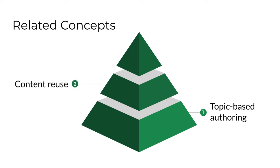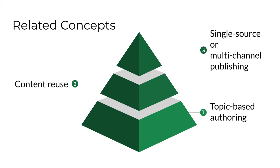Content reuse is what a company does with those modular topic files — it means pulling the same topic file out of the database to reuse whenever and wherever that content is needed. Single source, multi-channel, or omni-channel publishing means reusing the same topic file, for example in a blog post on a website, a white paper sent as a PDF via email, and a print brochure handed out at a trade show. There's a single copy of the content — a single source of truth with zero formatting — because format is applied when the topic is used inside a publication.